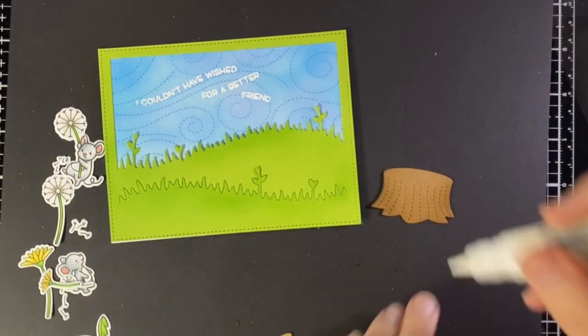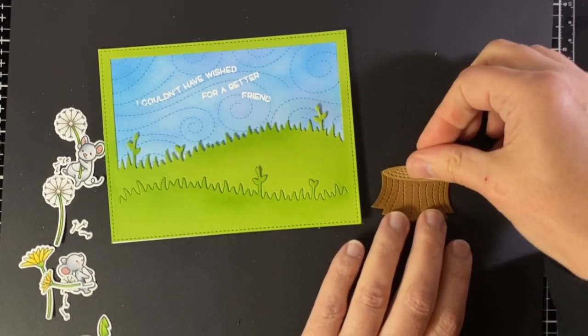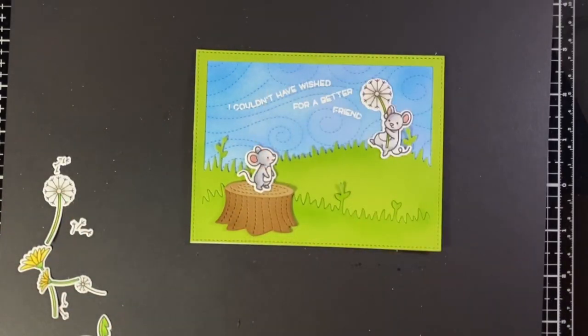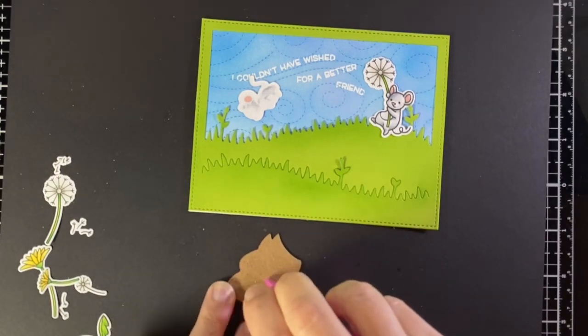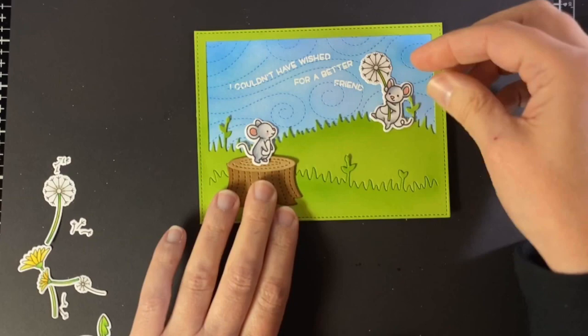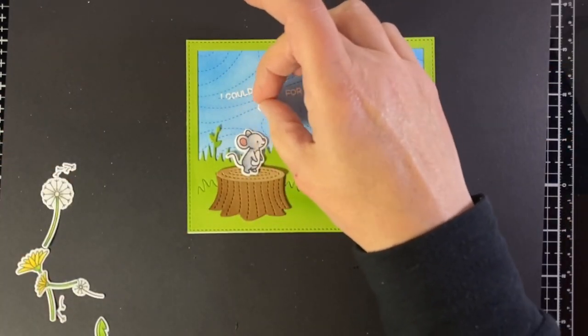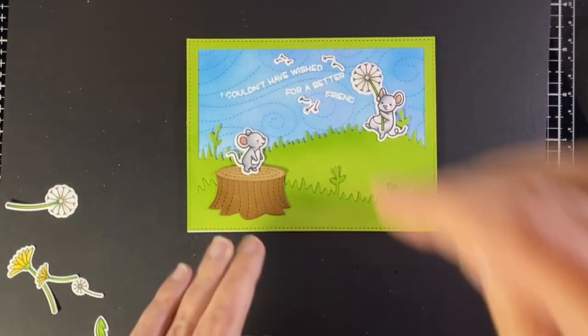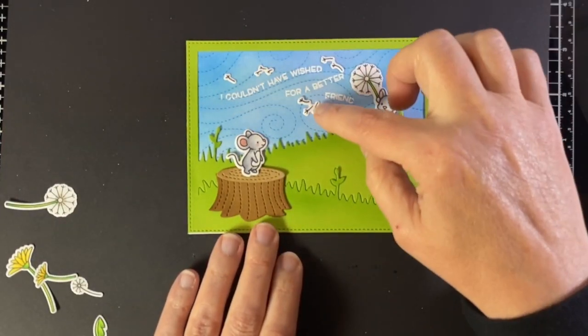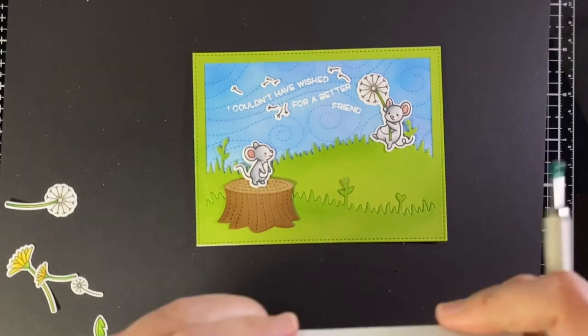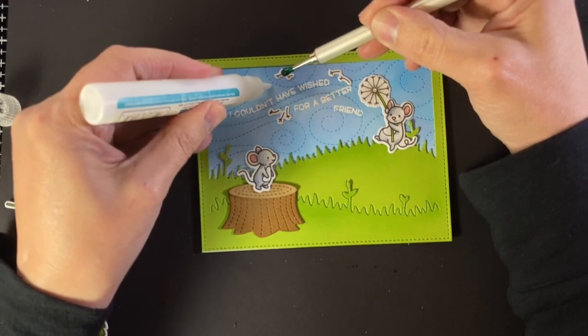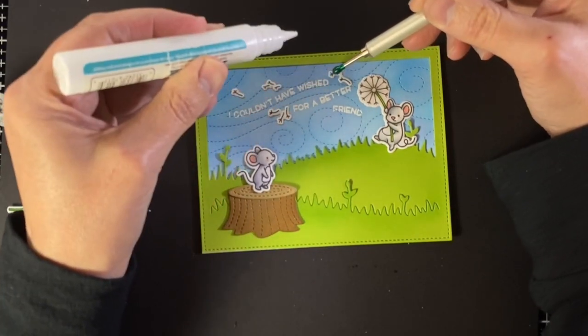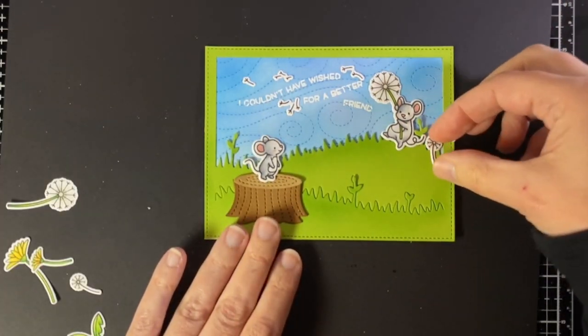I will glue that stump and the top of the stump together. Time for the fun part. This so reminds me of color forms because they were like these vinyl pieces that were little images and you could stick them on a scene background anywhere you wanted. Here's our dandelion fluff and you can see they were cut into smaller areas. I'm deciding how they're going to flow along with the sentiment. I've got a jewel picker here just picking those up, putting a little dot of glue down, and then getting the dandelion fluff glued.